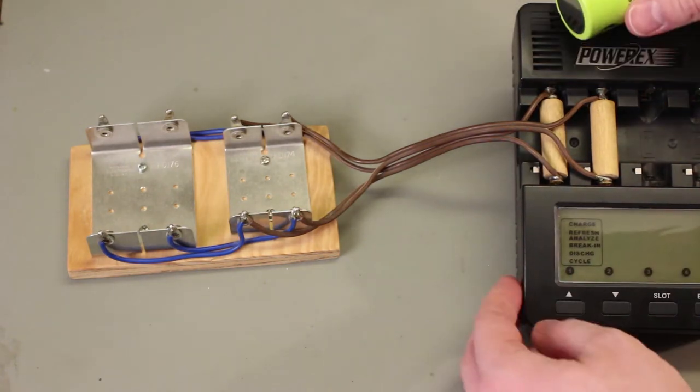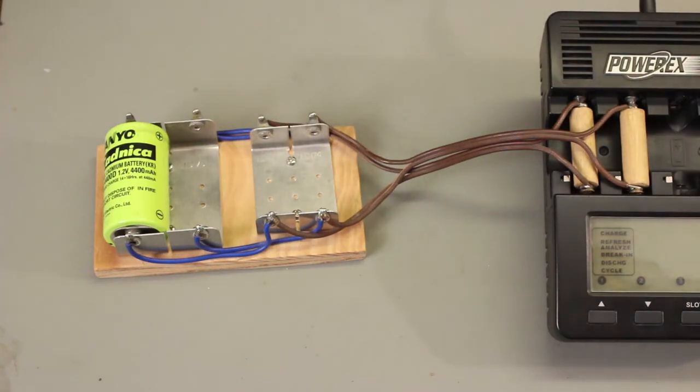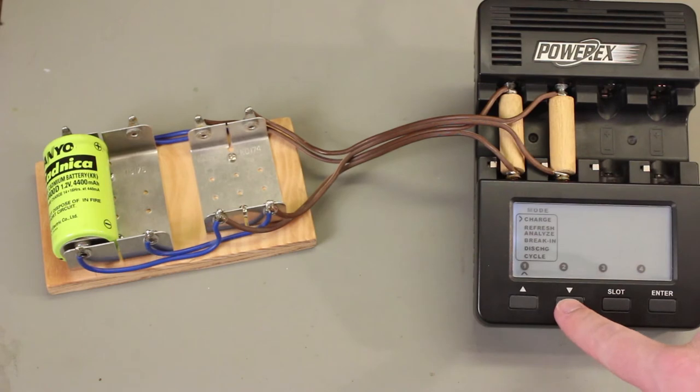Charging Cs and Ds in here is just the same as charging double A's and triple A's. Let's put the battery in the holder. The analyzer automatically detects that a battery has been inserted. And you can select the appropriate mode. Select your charge, just charge currents, and hit enter. It's that simple.